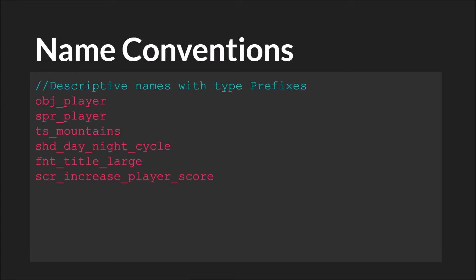Next, we have naming conventions. This is probably the most gray area. All I'll really say here is that you want to pick clear, readable names that are descriptive. You generally want to avoid abbreviations unless they are extremely common — you don't want to have to think about what your code means; you want to just be able to read it. With resources in GameMaker Studio 2, such as sprites or objects, it's fairly common to put a short abbreviation before the variable name, like obj_player, spr_player, ts_mountain, or scr_something. What you're striving for is readability.